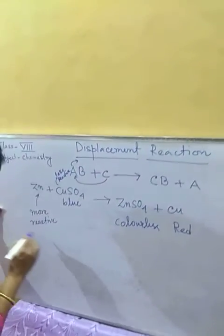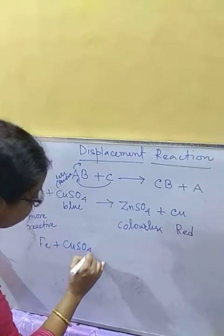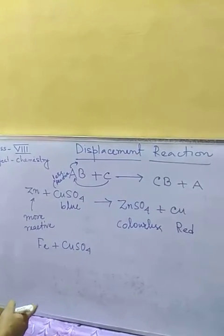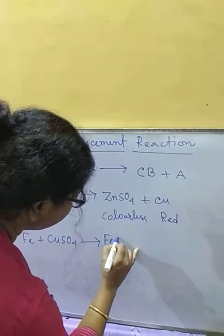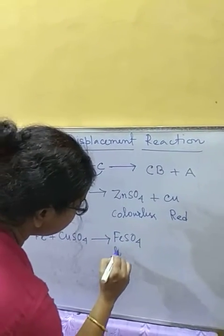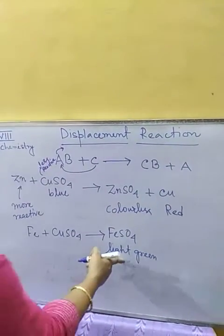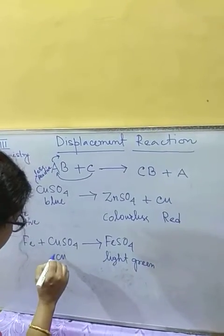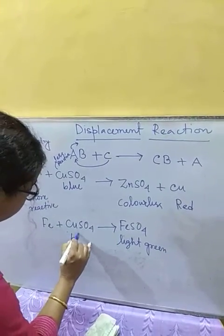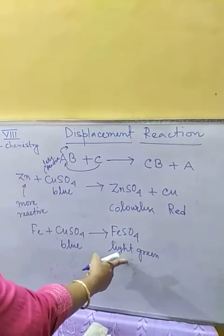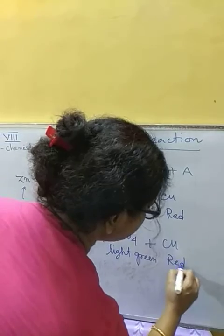In the same manner, iron reacting with copper sulfate — since iron is more reactive than copper — iron will displace copper to produce ferrous sulfate (FeSO₄), which is light green in color. So the blue color of copper sulfate converts to light green.